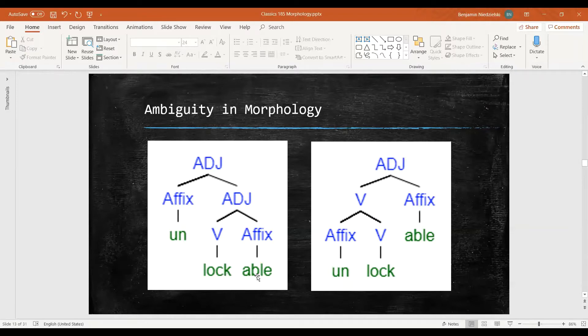On the right we have a tree for the other meaning. The word still comes out as unlockable, but the meaning is different. We start with our verb lock and we add our prefix un first, creating a verb unlock.